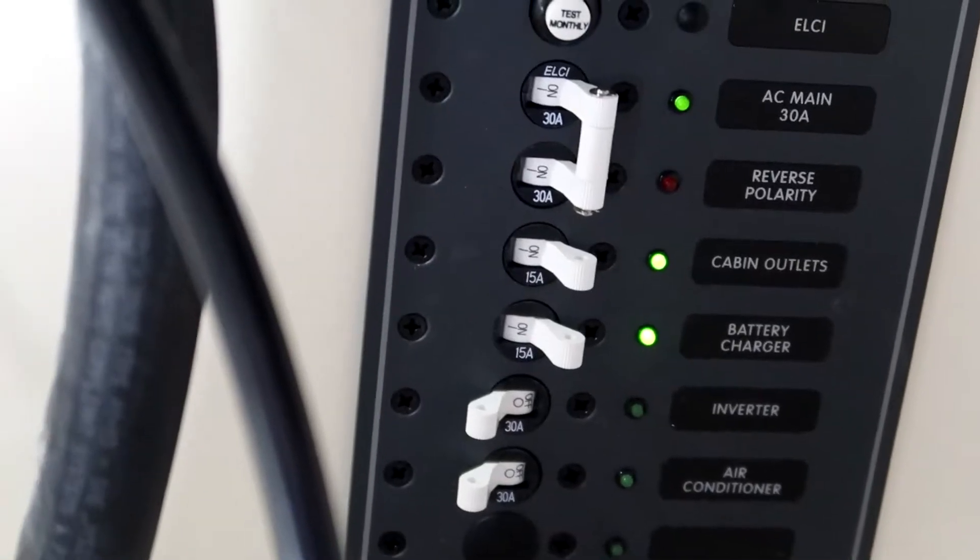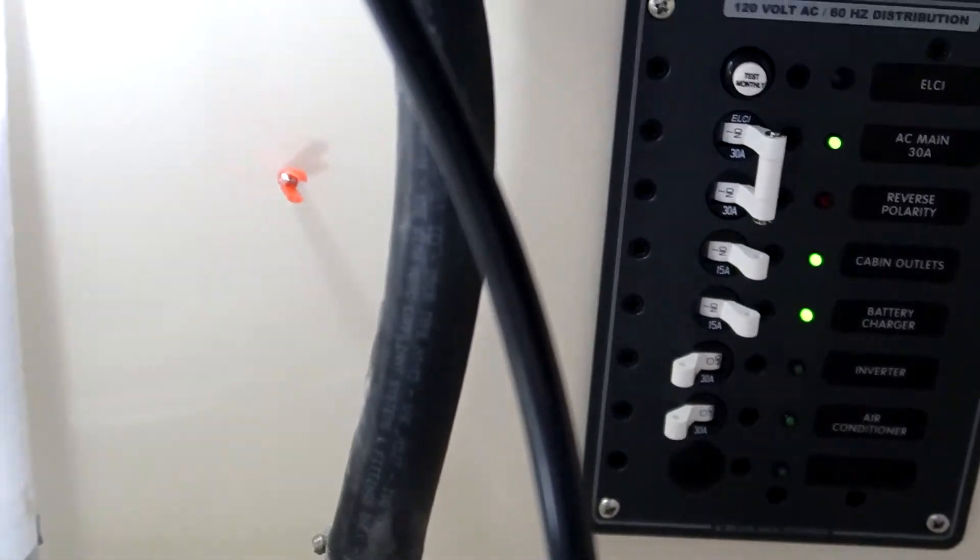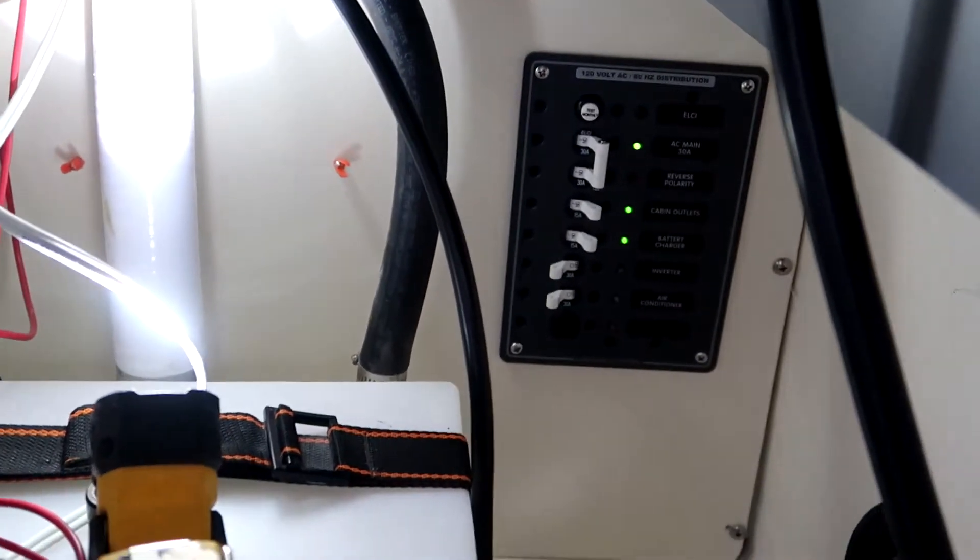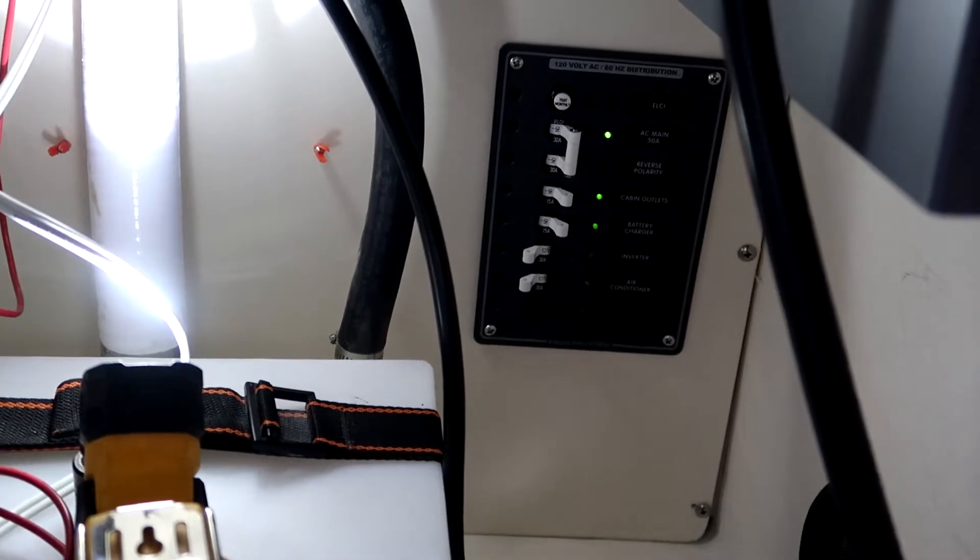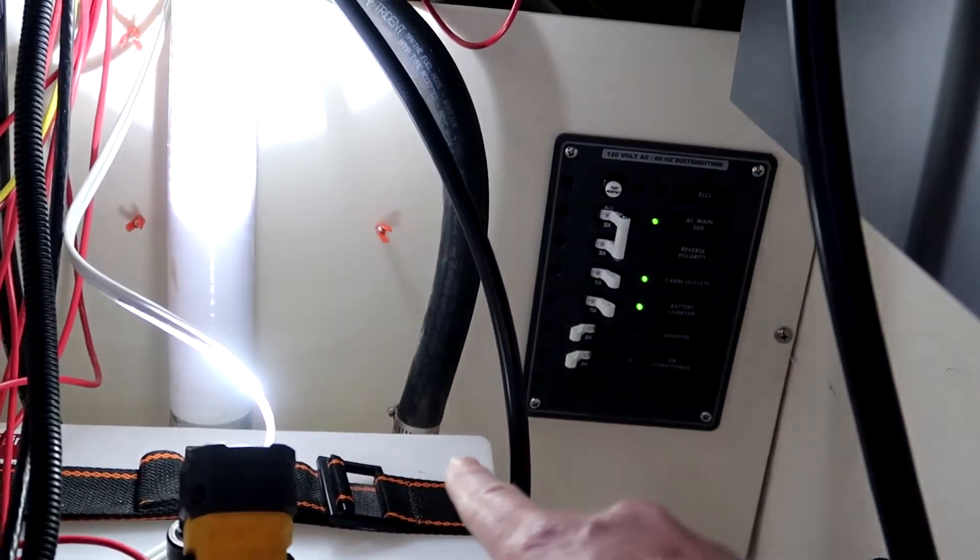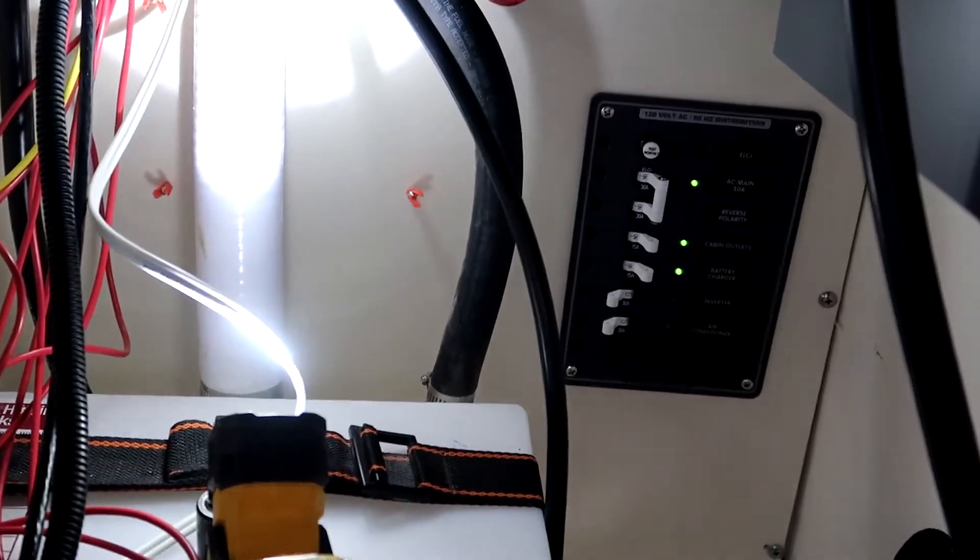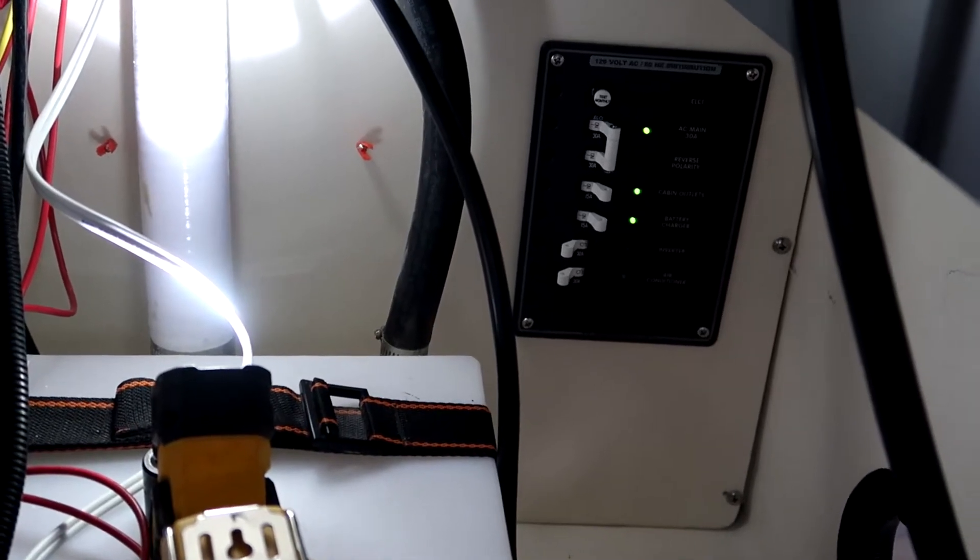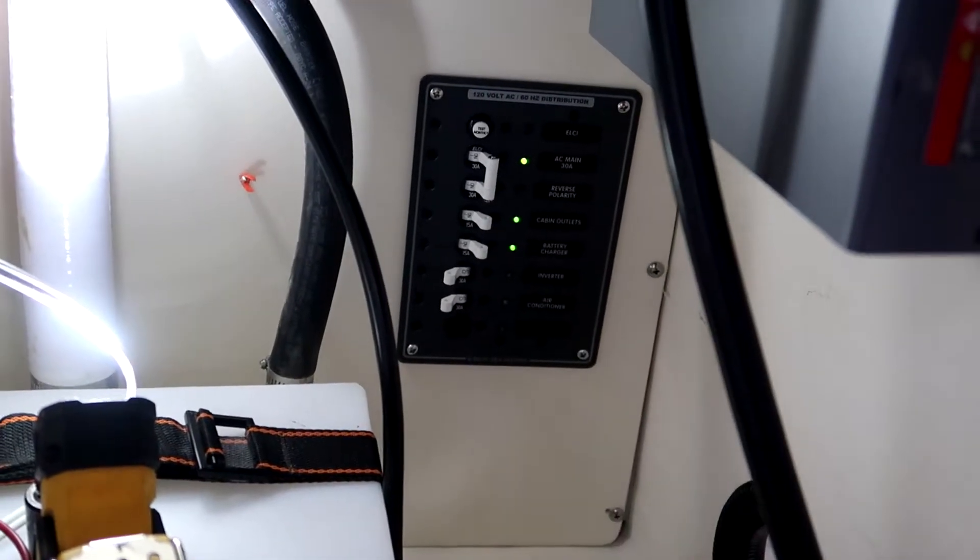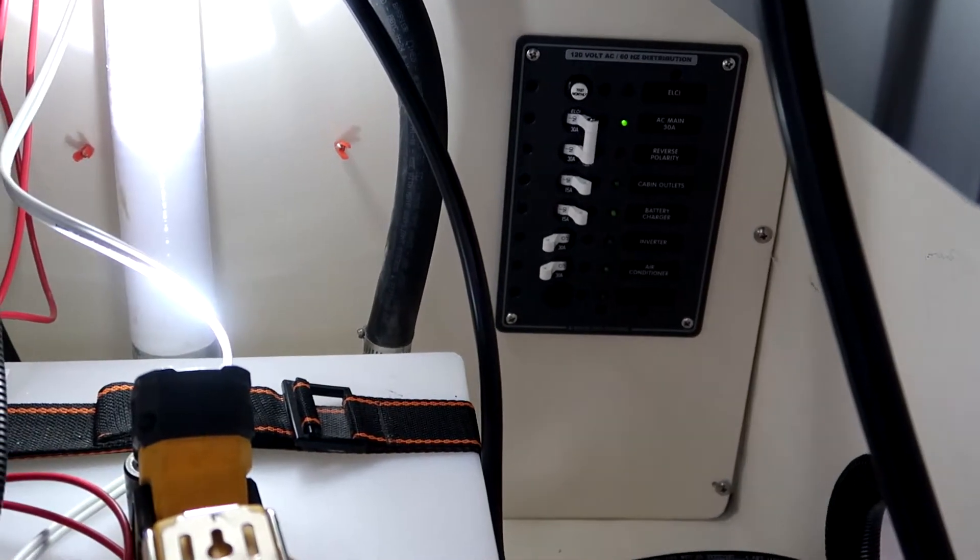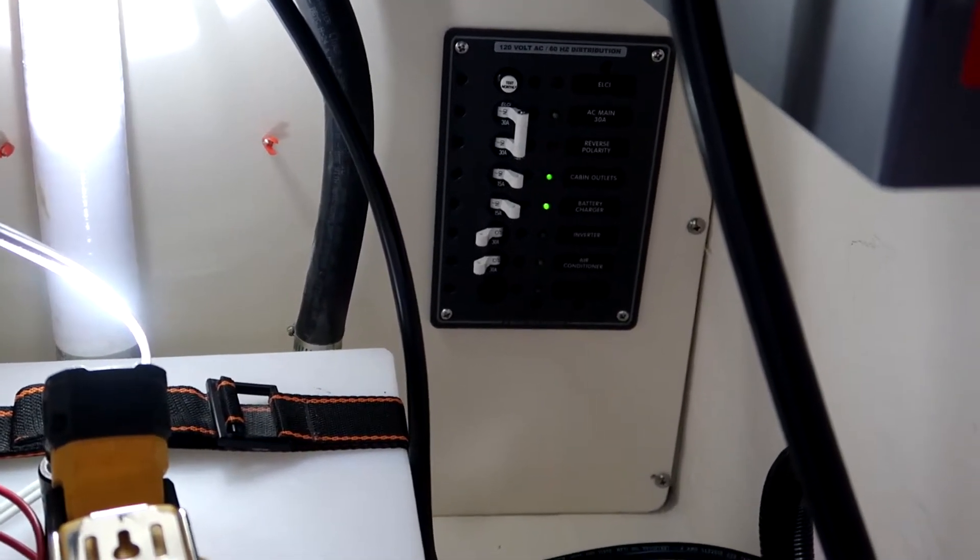On the back side here, I put a galvanic isolator. So back there in the very back, there's the shore power coming in. It comes in from the back, it goes into the galvanic isolator, the ground does, and then that ground goes back to my panel here. So before going into my panel, I'm running the ground into a galvanic isolator.